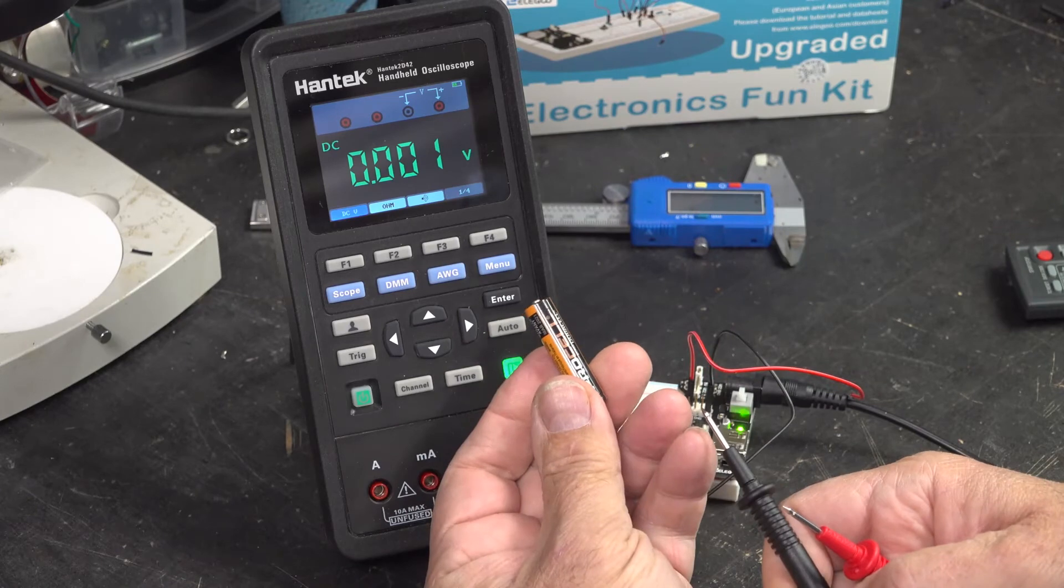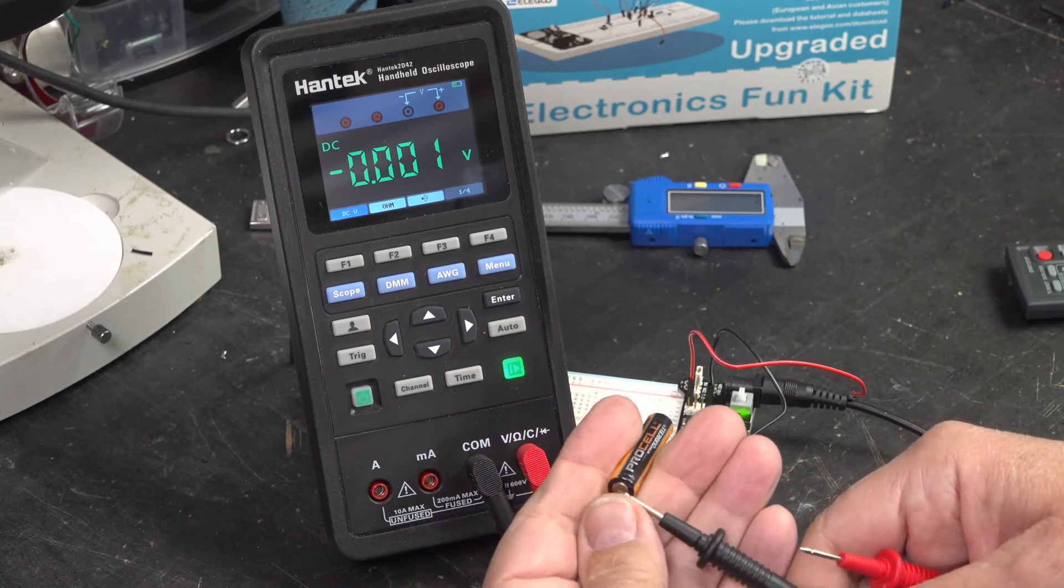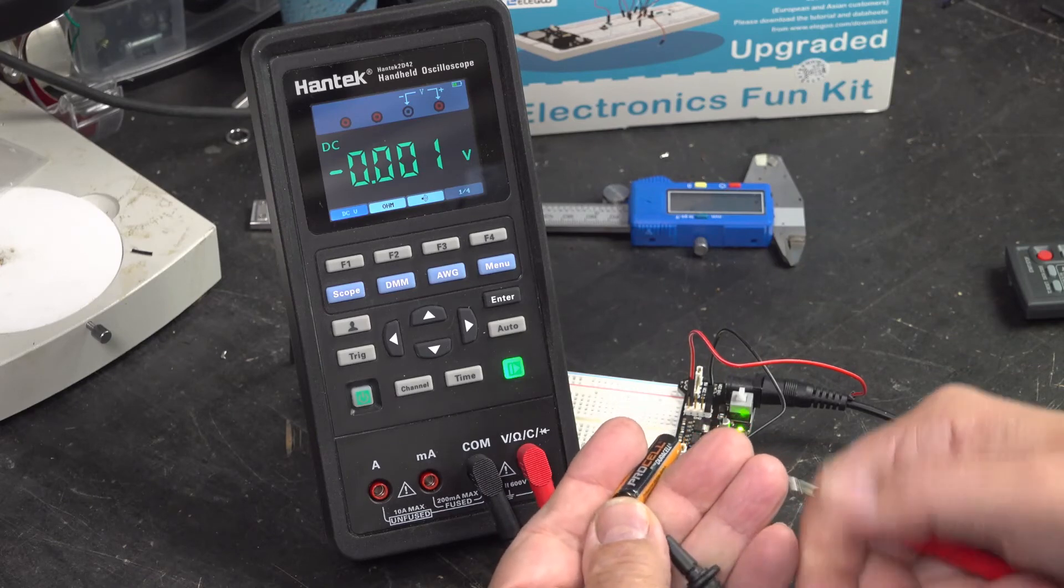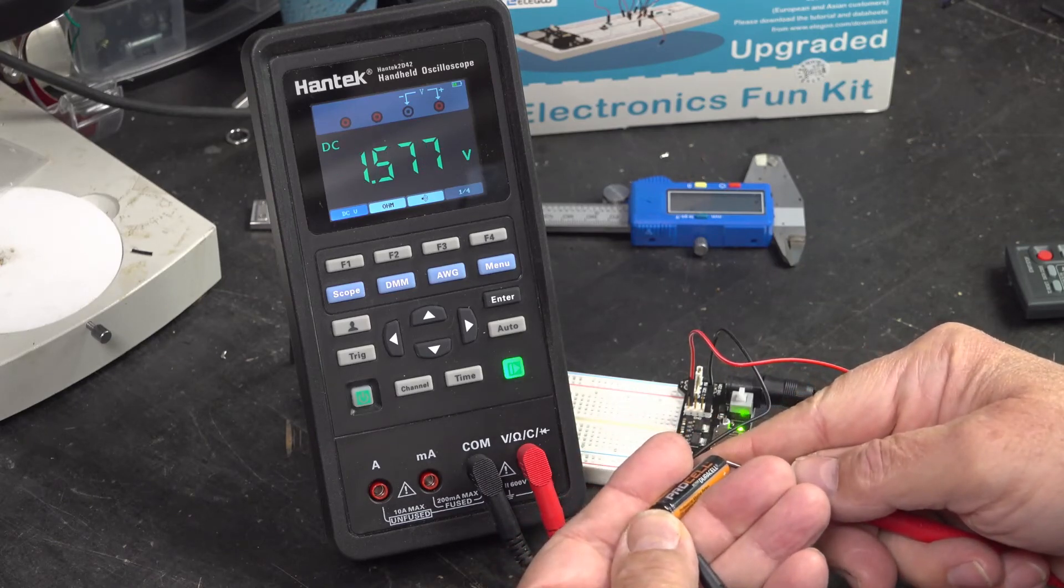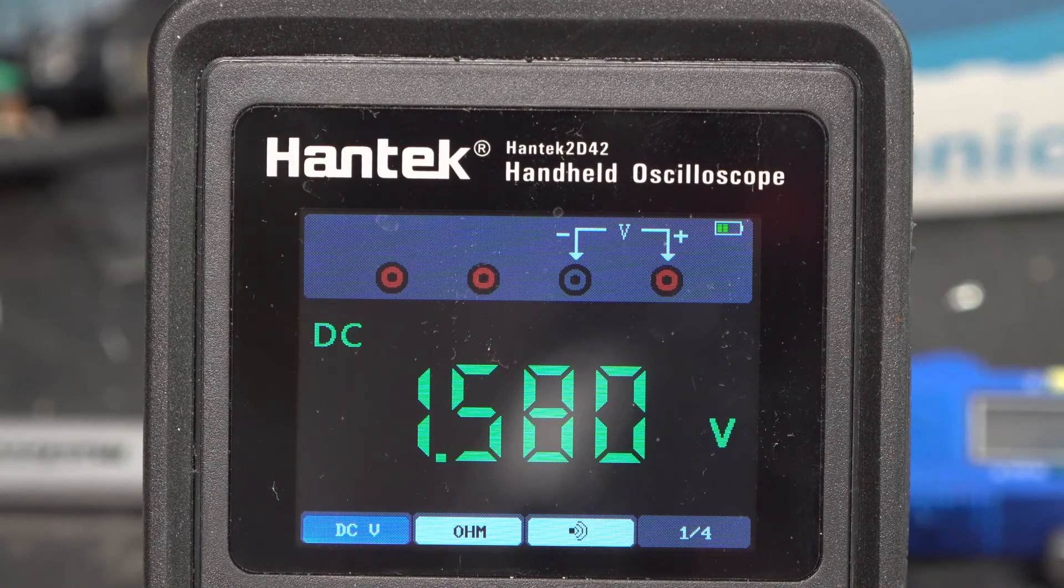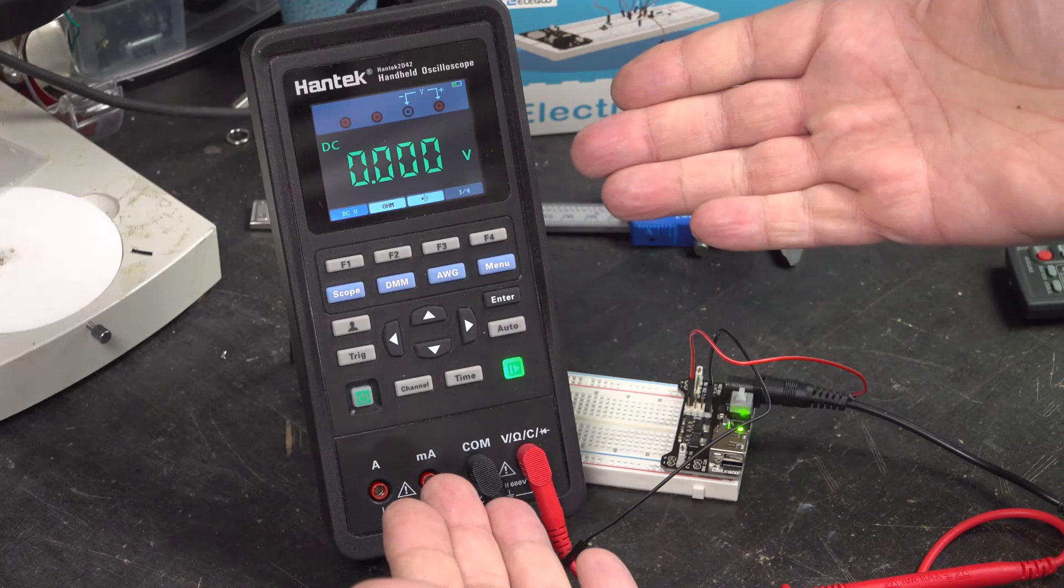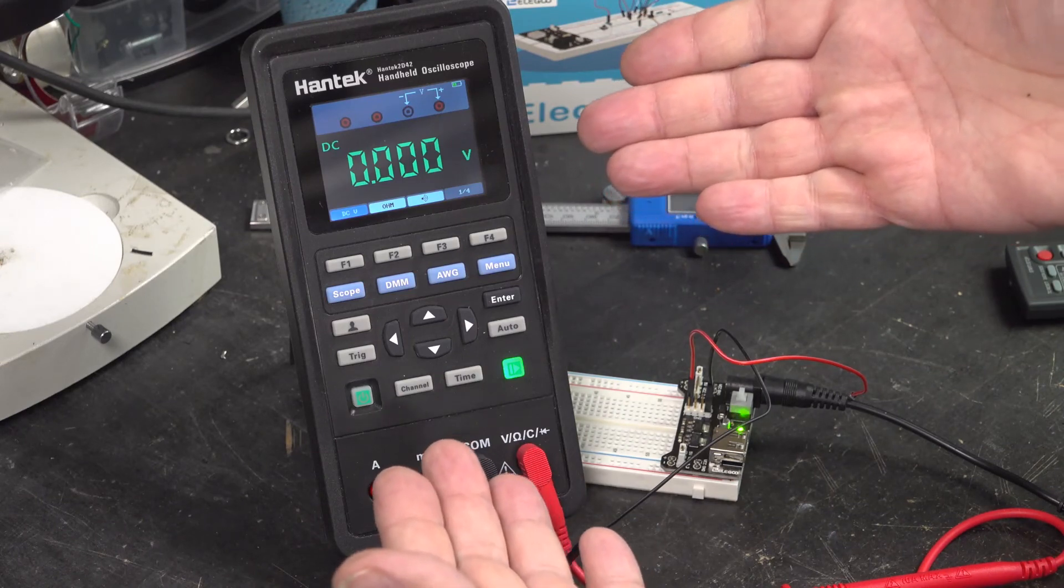Now you can also use this to measure batteries, because batteries are DC. Here's a AAA battery, which typically is 1.5 volts. The big button side is the negative, the small dimple is the positive, and we have 1.579, 1.58 volts DC. So that's it. That's how you use the Hantec to measure DC voltage.